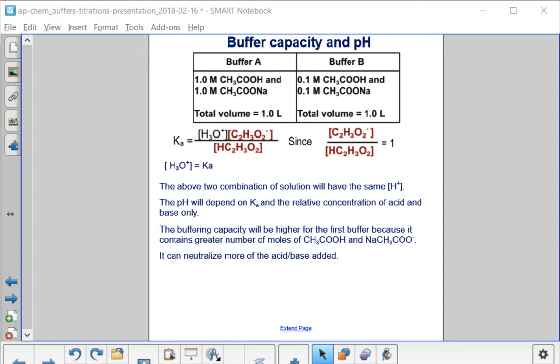Now, if I were to write the Ka expression for the dissociation of the acetic acid, I'd have H3O+ concentration times acetate concentration over the acetic acid concentration. And for both buffers, if you look here, both have one molar acetic acid and one molar acetate.